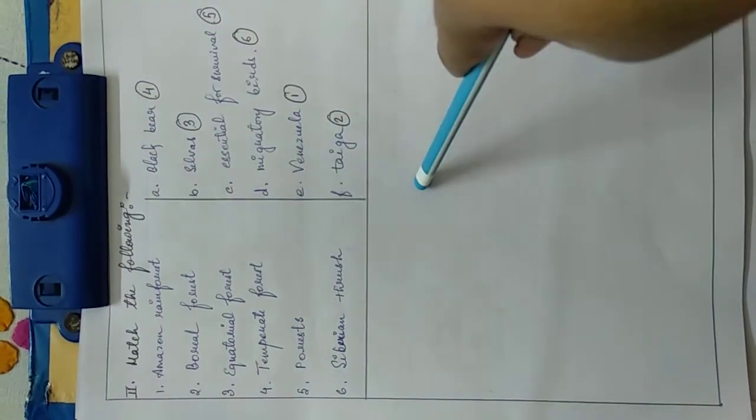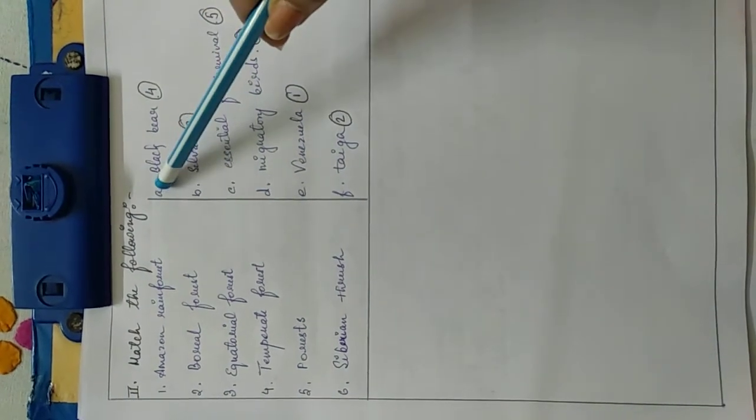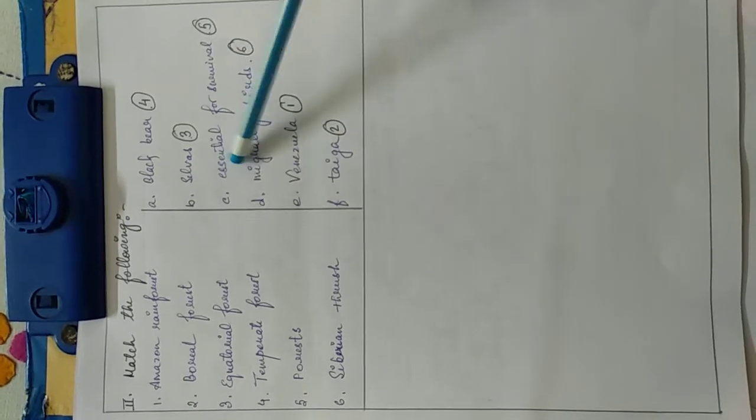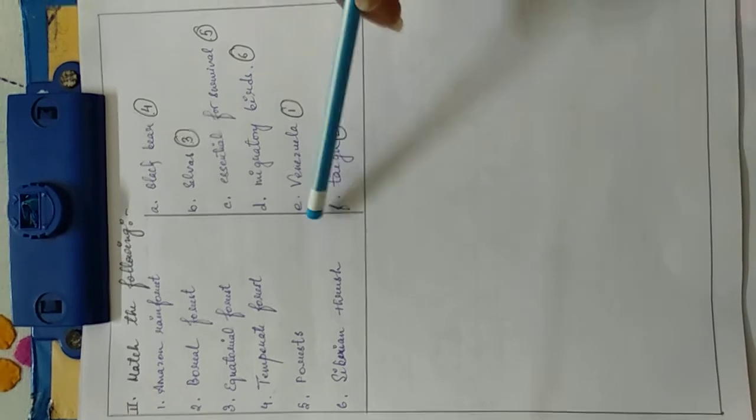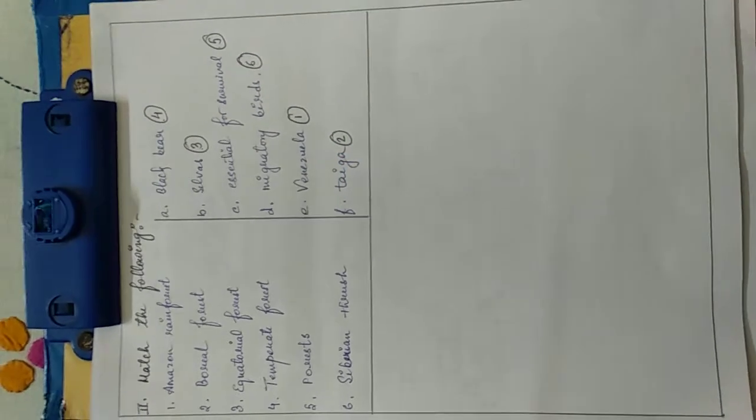Now we will draw a line from the middle and here we will write the second part. A: black bear. B: selvas. C: essential for survival. D: migratory birds. E: Venezuela. F: tiger.